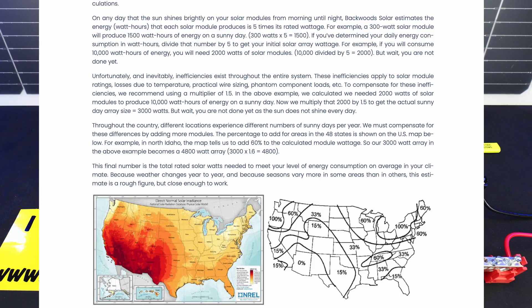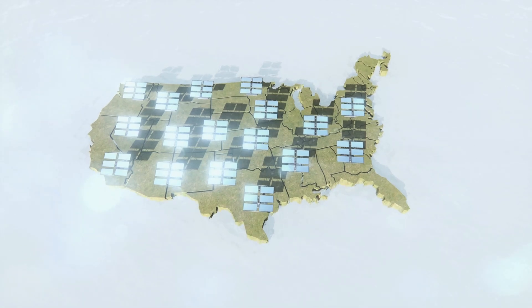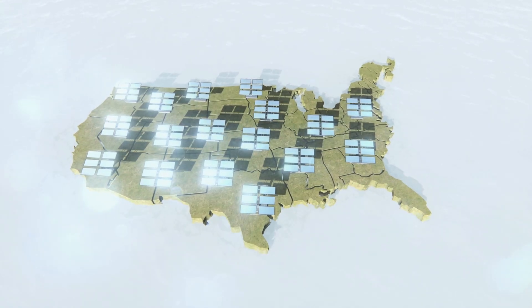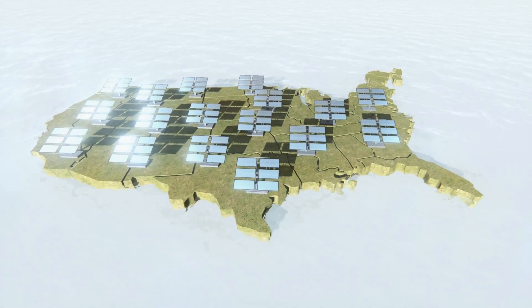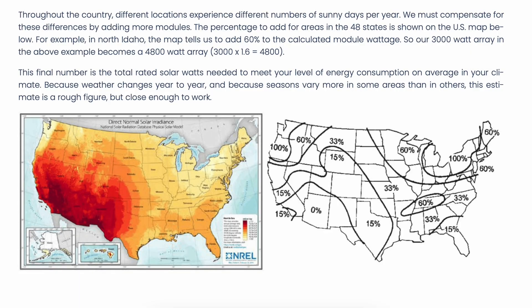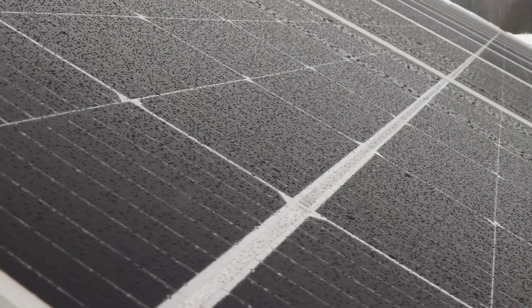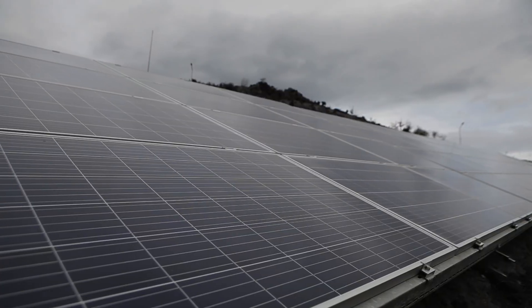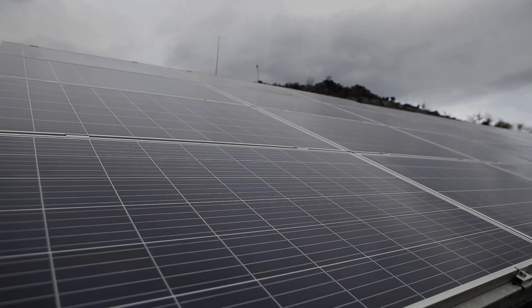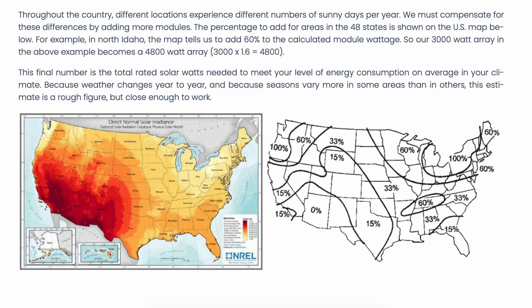However, we have one other factor we need to take into consideration: regionality, and with that some seasonality as well. So here in our example, if we have that 3,000 watt array and we're here in North Idaho, we're going to add 60% of loss to that, assuming relatively poor winter conditions and short winter days. So if we take that 3,000 watts and multiply it by 1.6, we're going to find out that to produce that 10 kilowatt hours here in North Idaho, we would need an array size of about 4,800 watts.